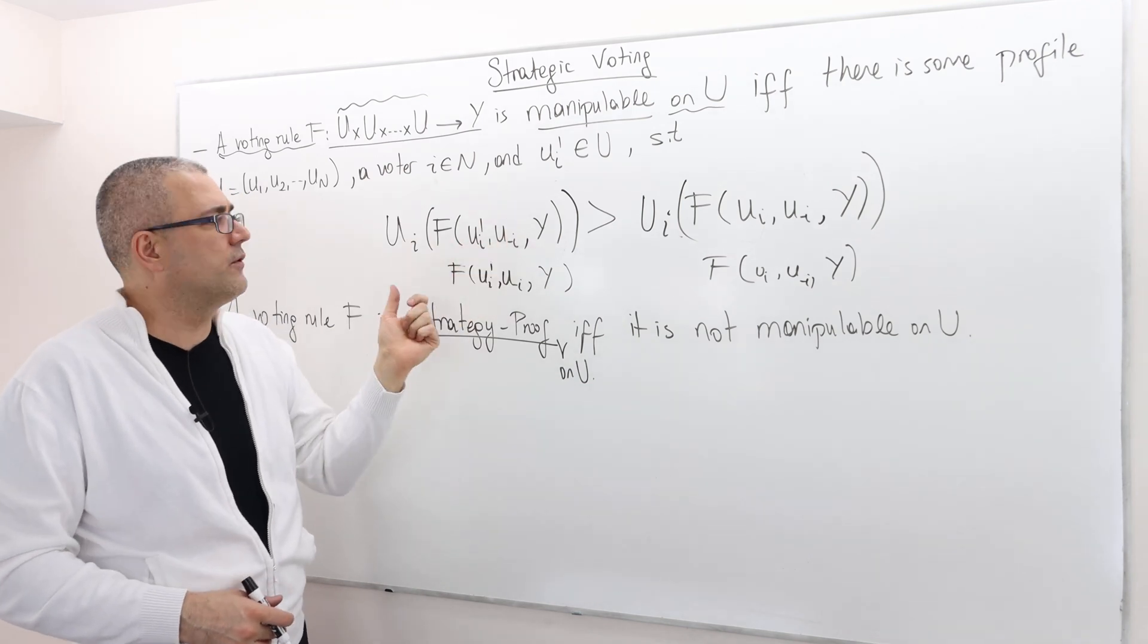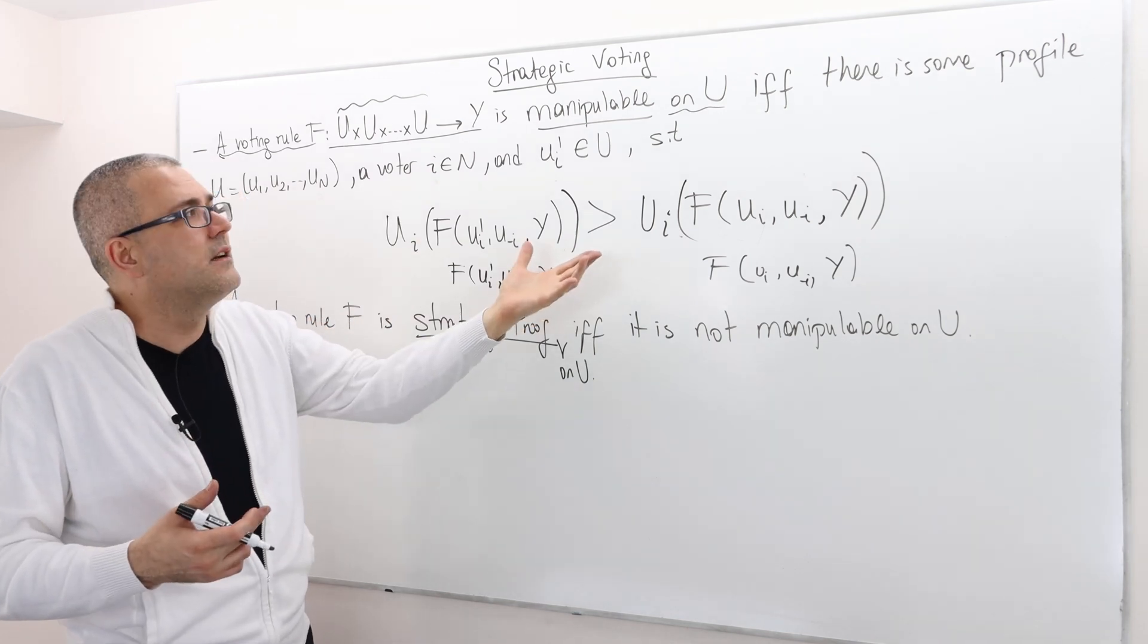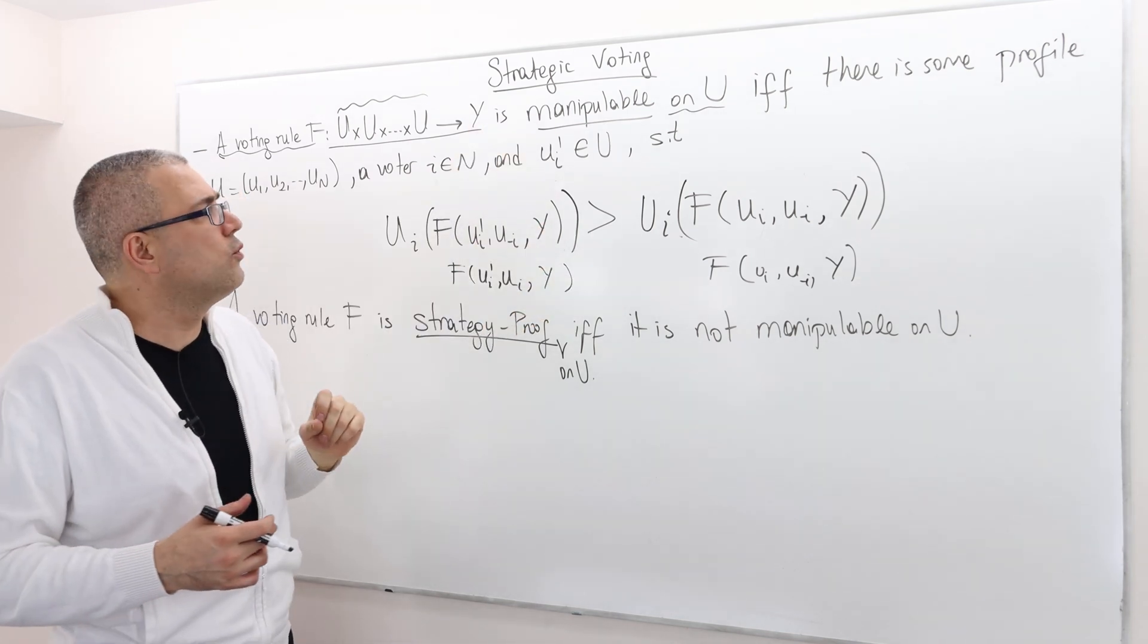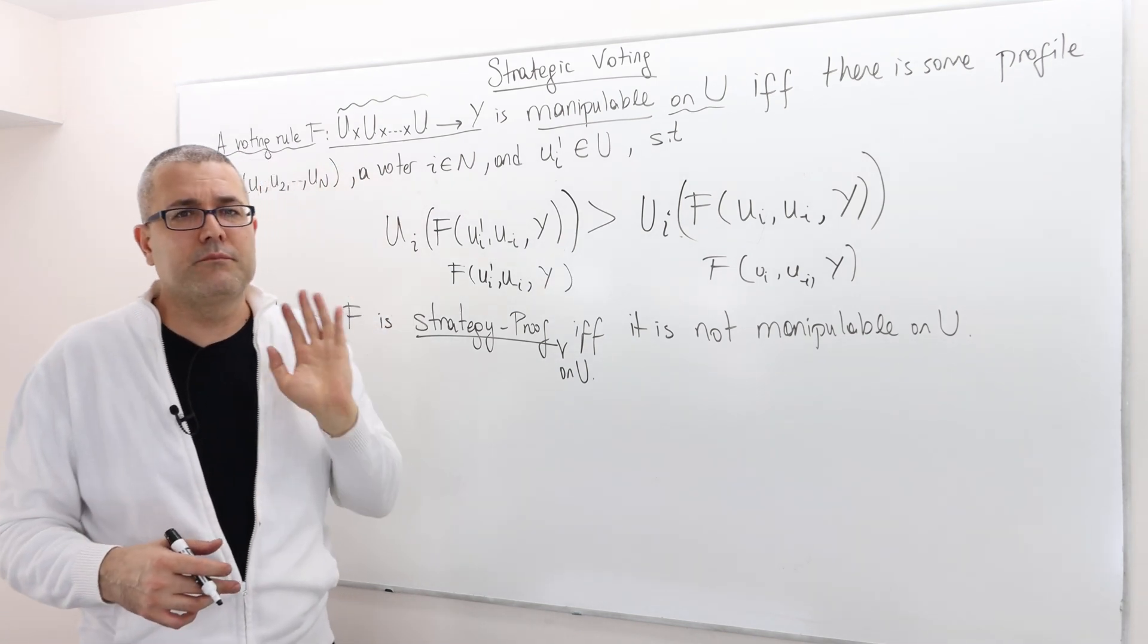And so by changing the outcome, by lying, you benefit from it. So if this is the case, well, then we say the rule, the voting rule is manipulable.